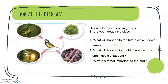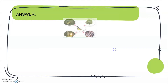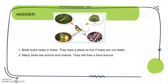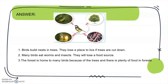Here are the answers. Number one: birds build nests in trees — they lose a place to live if trees are cut down. Number two: many birds eat worms and insects — they will lose a food source. Number three: the forest is home to many birds because of the trees, and there is plenty of food in the forest. Write these answers in your science exercise book.